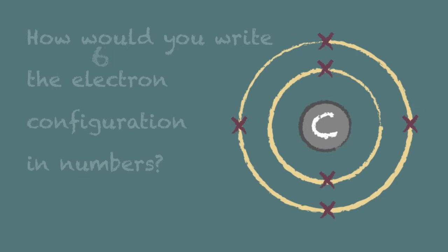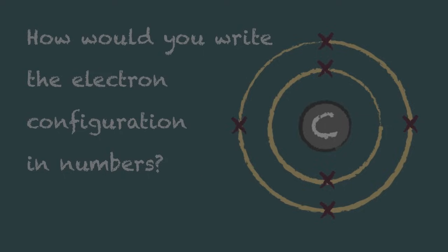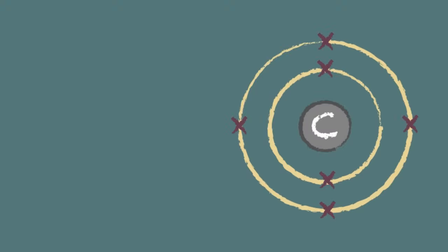Now, how would you write the electron configuration in numbers for this atom? Pause the video again or rewind if you need to have a think about this. The answer is that it would be written 2.4.